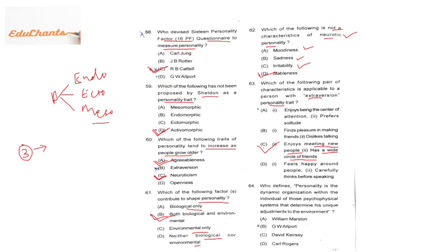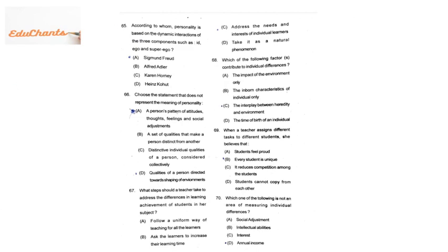Question 64: who defines personality as 'the dynamic organization within the individual of those psychophysical systems that determine his unique adjustment to the environment'? This definition — personality as dynamic, helping the individual adjust to a new environment — was given by Allport. Question 65: according to whom is personality based on the dynamic interaction of id, ego, and superego? That is Sigmund Freud, known as the father of the psychosexual theory.